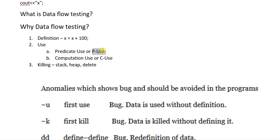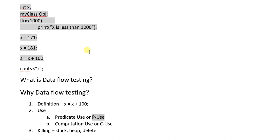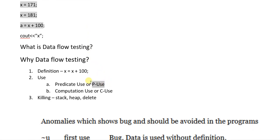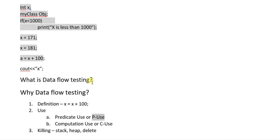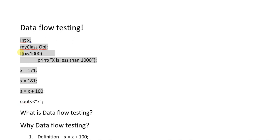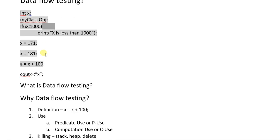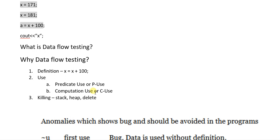P-use is the usage of a variable in predicate logic, like an if-else condition where we compare the value of the variable with some other value using comparative operators. Like here we are comparing X with 1000 — this is predicate logic, so it is called P-use.